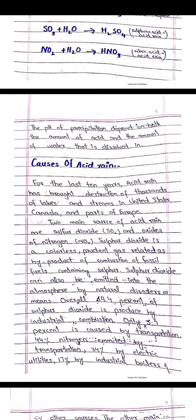The pH of precipitation depends on both the amount of acid and the amount of water in which it is dissolved. Causes of acid rain: for the last 10 years, acid rain has brought destruction to thousands of lakes and streams in the United States, Canada, and parts of Europe.